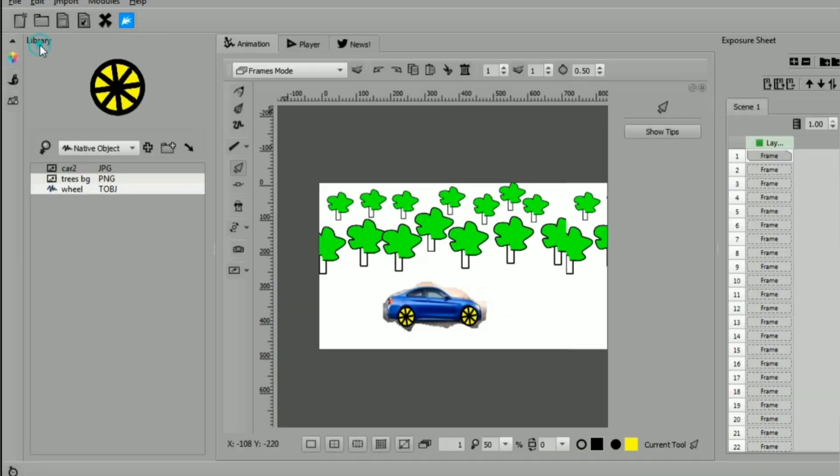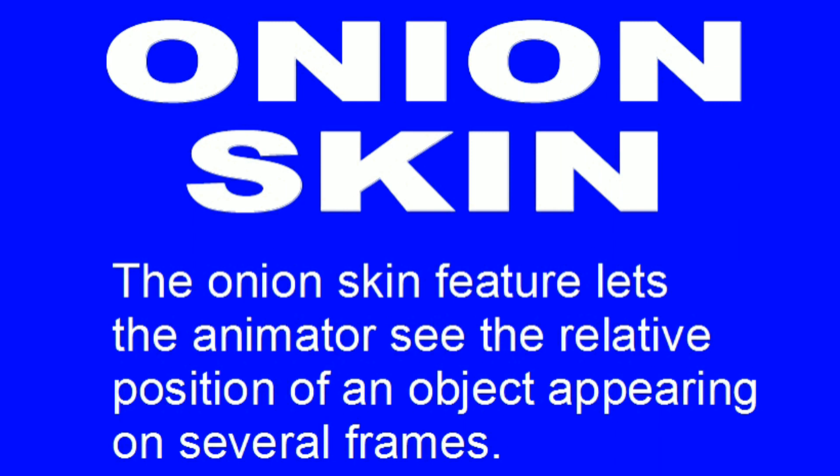Let us discuss the definition of onion skin. The onion skin feature lets the animator see the relative positions of an object appearing on several frames. I hope I am clear to you. In case of any doubt, please put in a comment. Thank you.